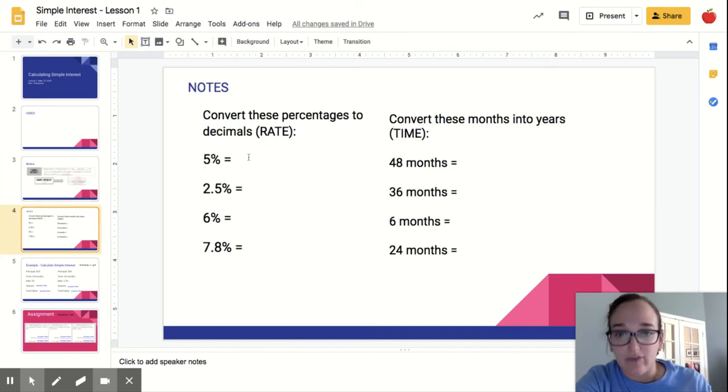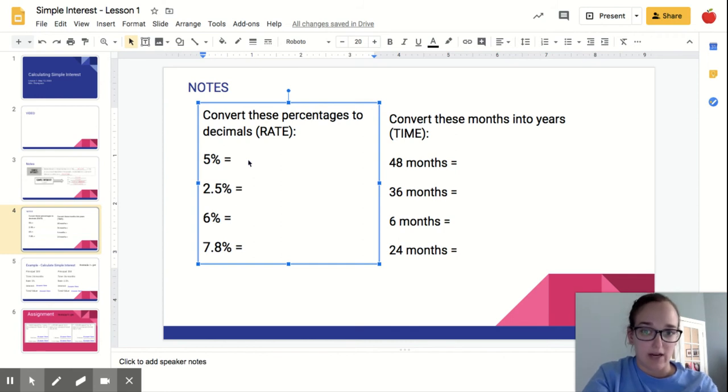So just as kind of a refresher, we have to convert our percentages into decimals in order to find the rate, because we can't multiply a percentage, so you have to have it written as a decimal. So just as a refresher, 5% means five out of a hundred, which would be written 0.05, five hundredths. You move that decimal point, one, two places to the left. So same thing here, 2.5%, I would go one, two. So I would get 0.025.